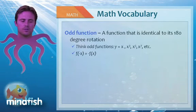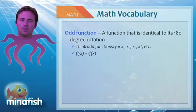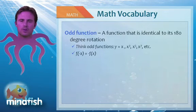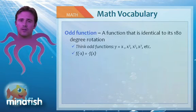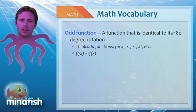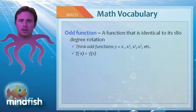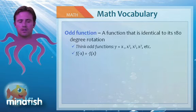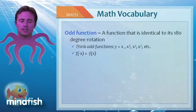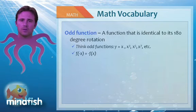Odd functions refer to functions that can be rotated 180 degrees. If you draw a function and flip the paper 180 degrees, it should look the same. Odd functions include functions with odd powers: x to the first, x to the third, x to the fifth, and x to the seventh. Also, you can use the equation negative f(x) equals f(negative x) for an odd function.